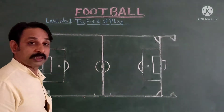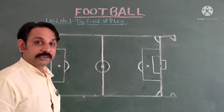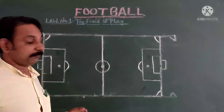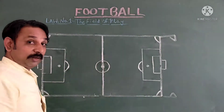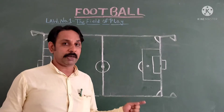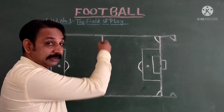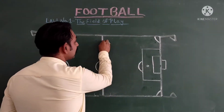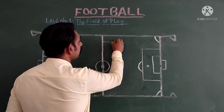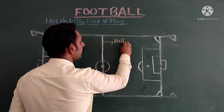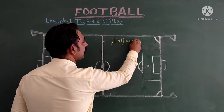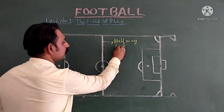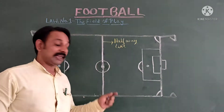As you know, this is a football field and the ground is a rectangle shape. This ground is divided into two parts. The line which divides the ground into two parts is known as the halfway line.